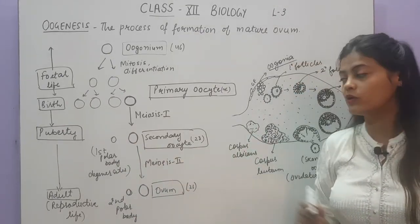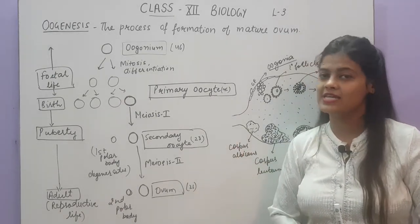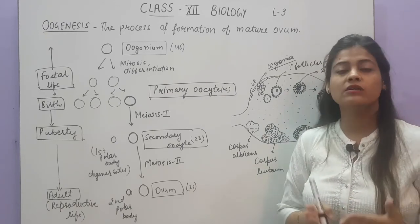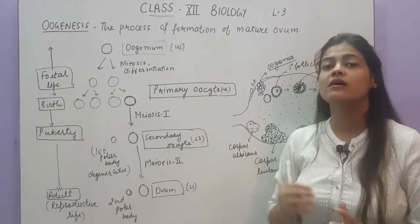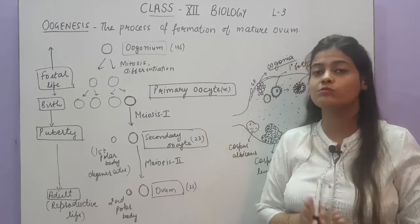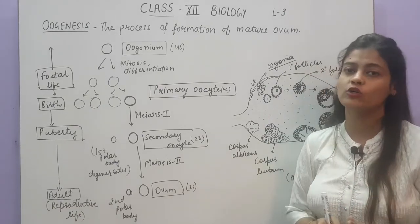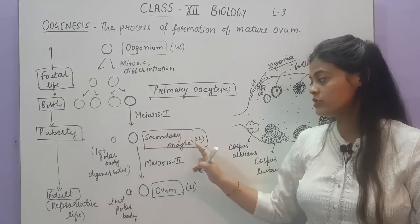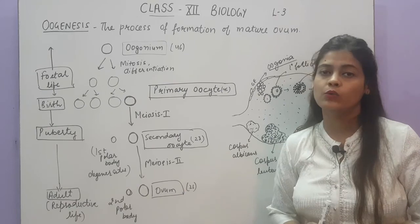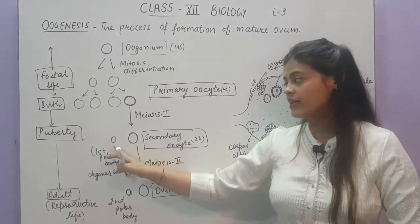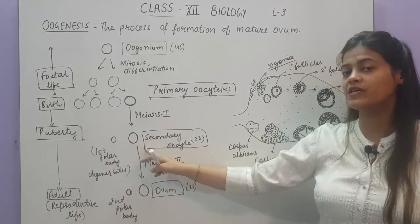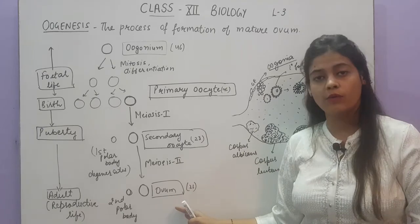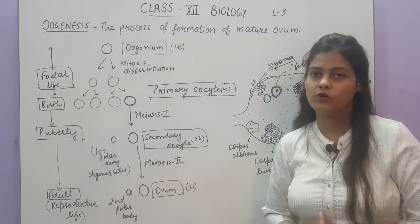Why are a smaller and bigger cell formed? Because the processing of ovum formation requires that after fertilization, when the male and female gametes fuse, the zygote will have cytoplasm from the female gamete only. So during meiosis 1 here, karyokinesis takes place as usual — reducing chromosomes to half — but cytokinesis is not equal. Very little cytoplasm is given to the polar body, and most cytoplasm is retained by the secondary oocyte, because it will further develop into the ovum, which must carry sufficient cytoplasm for fetal development.